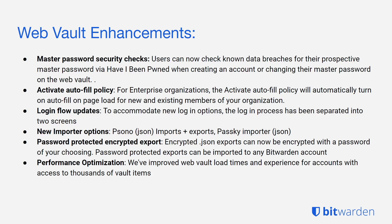We've improved importer options, including Psono JSON imports and exports as well as a JSON passkey importer. You can now password-protect your encrypted exports — encrypted JSON files can now be encrypted with a password of your choosing. These password-protected exports can be imported into any Bitwarden account rather than being tied to the original user. And as always, we have performance optimizations: we've improved Web Vault load times and the experience for users who have multiple thousands of vault items, and we're always making those performance optimizations as we can.